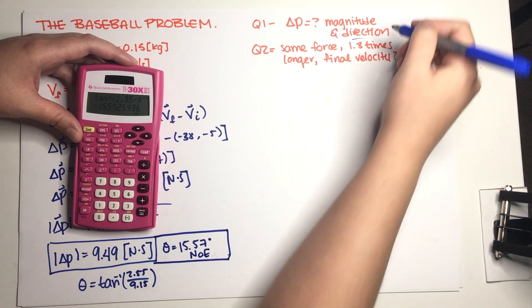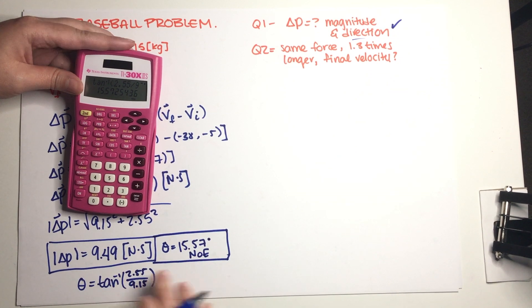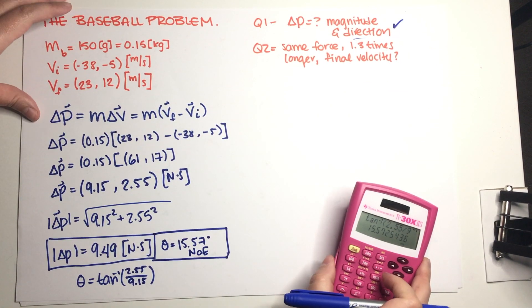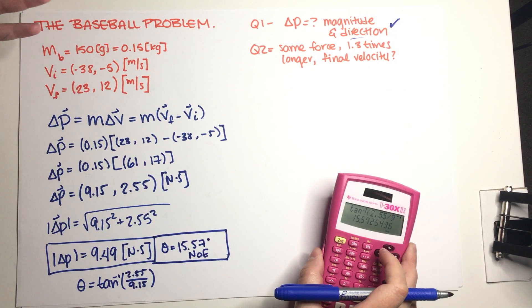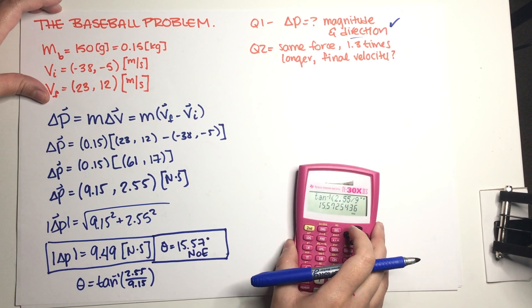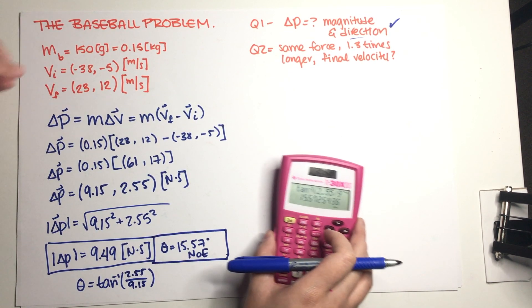There we go. So this is the first part of the problem, it was very straightforward. But again, we already had everything that we needed, it was just sort of an algebraic problem.